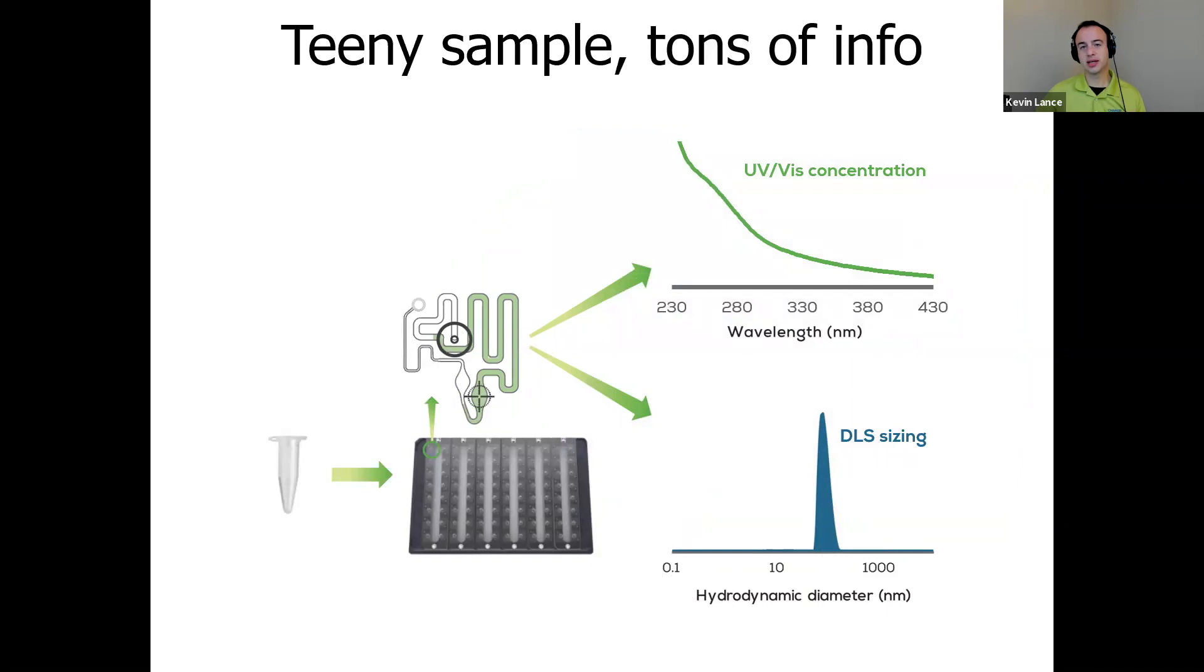Stunner contains two technologies to read each sample: UV-Vis for concentration and DLS for sizing, and samples can be read from 1 to 96 samples at a time. So Stunner's RNA LNP application combines both technologies on a sample to deliver total RNA quantification and low-volume, high-throughput size and size distribution data.